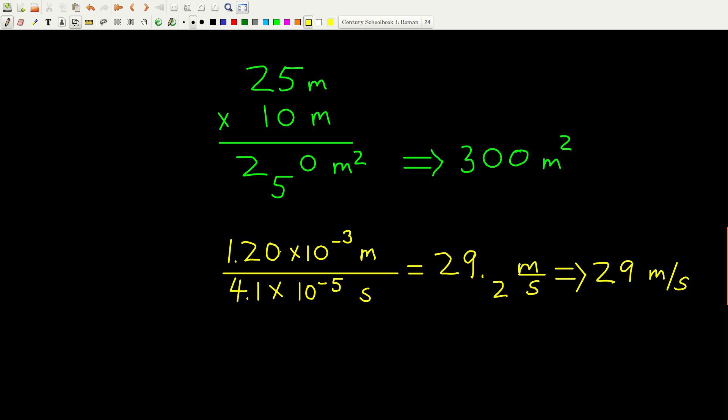Likewise, if we divide these two numbers here, 1.20 times 10 to the minus 3 meters by 4.1 times 10 to the minus fifth seconds. How many sig figs in the top number? Well, 1, 2, 3, the trailing zero does count because there's an explicit decimal point. The exponents don't count.